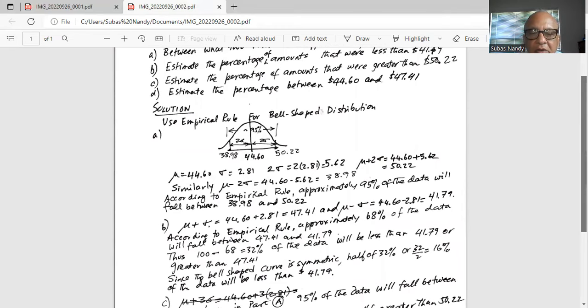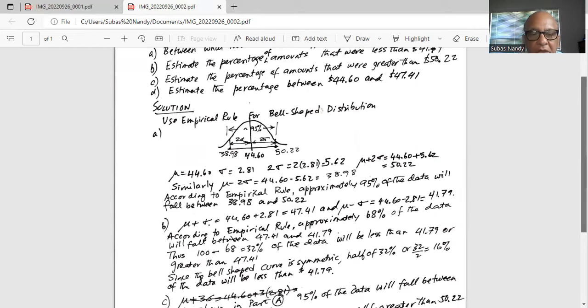According to empirical rule for bell-shaped distribution, approximately 68% of the data will fall between 41.79 and 47.41.